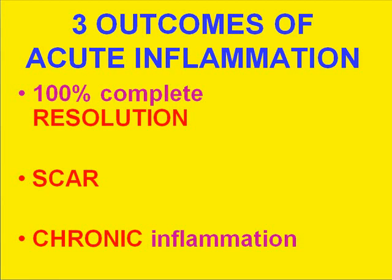Number one, the tissue could return back to normal histology — complete resolution. Number two, it could heal with a scar or fibrosis, which we'll deal with in the third chapter. Or, number three, if the stimulus which caused the acute inflammation is still present but the acute phase is gone, it could progress into chronic inflammation.